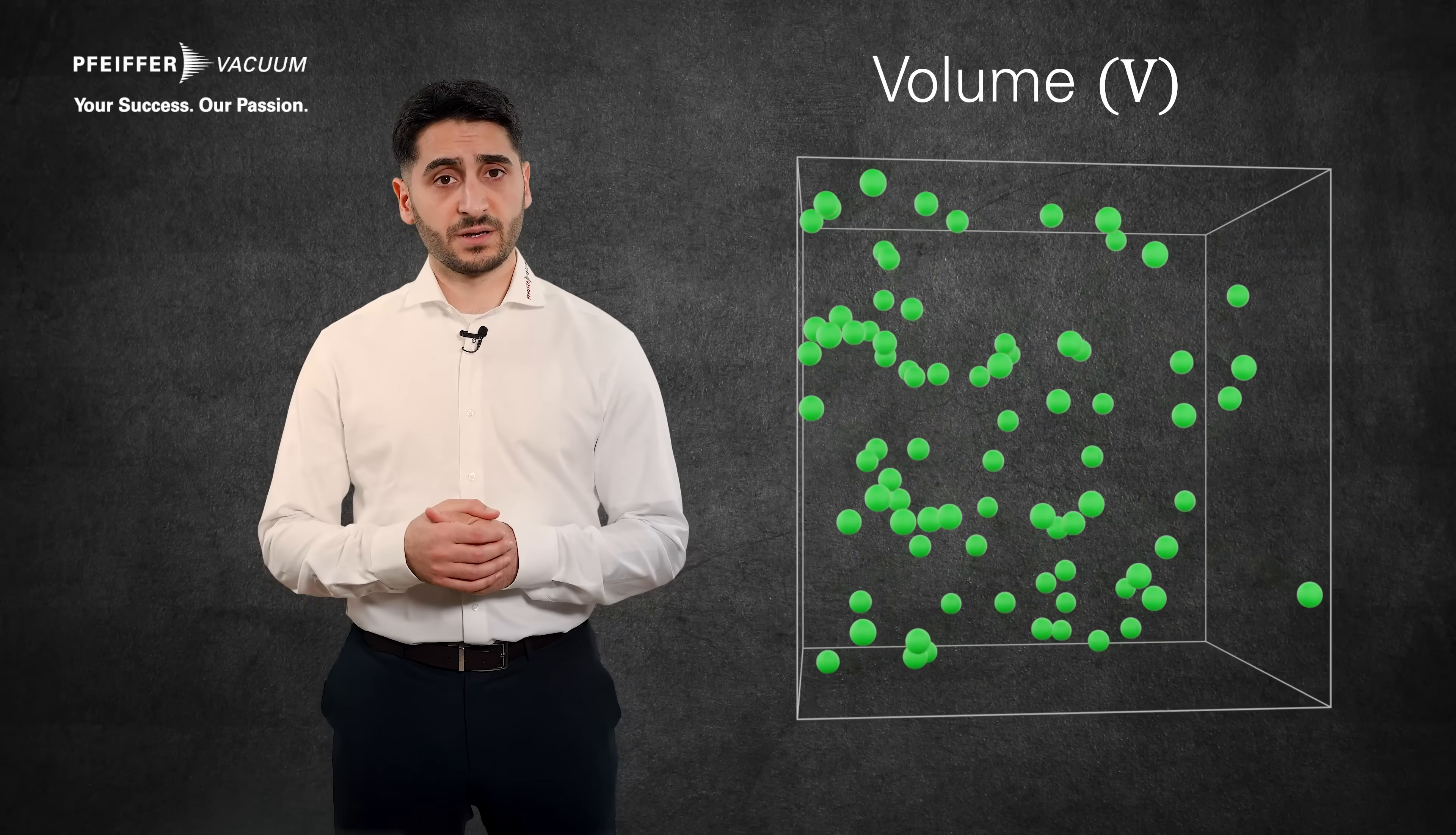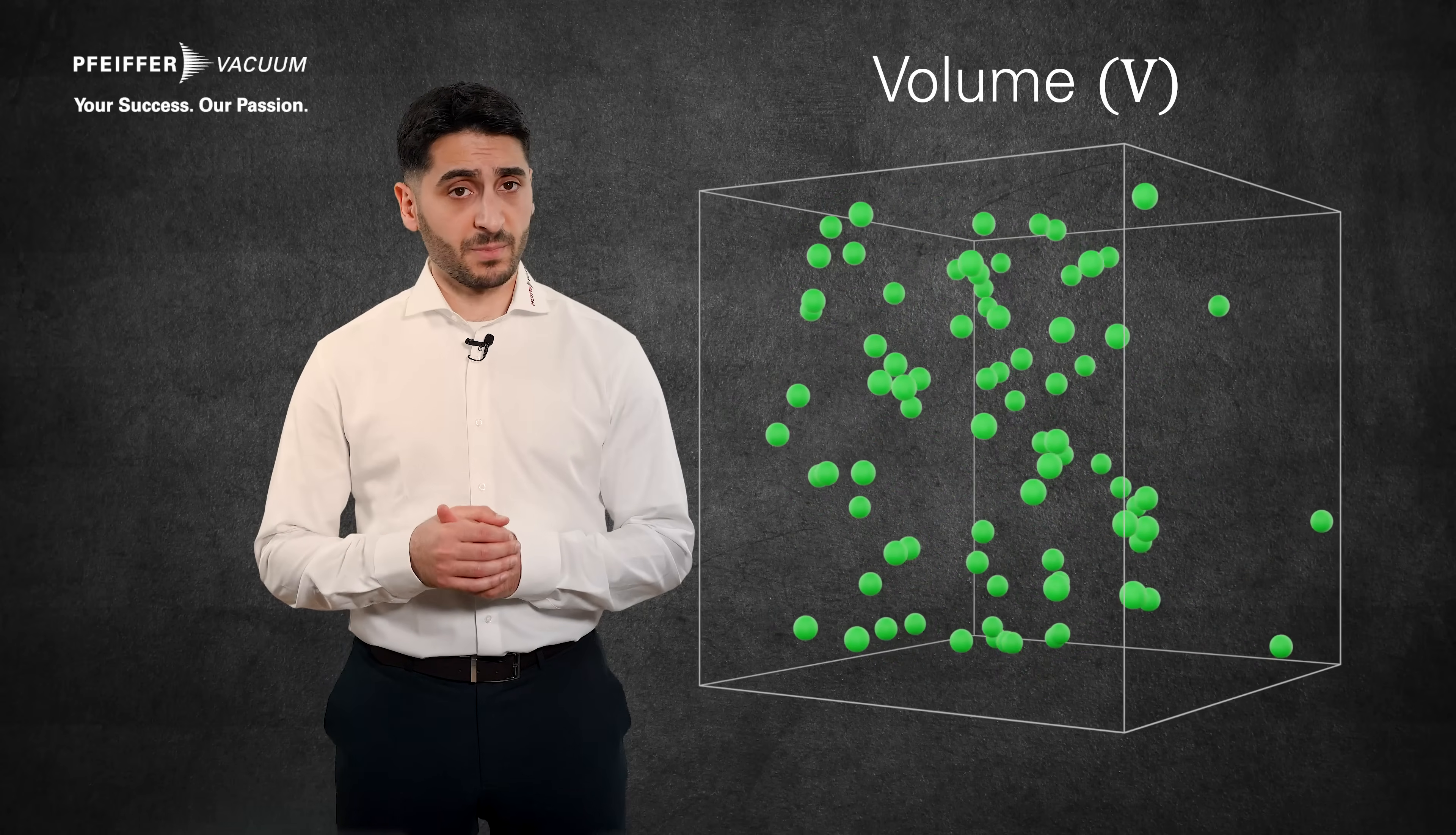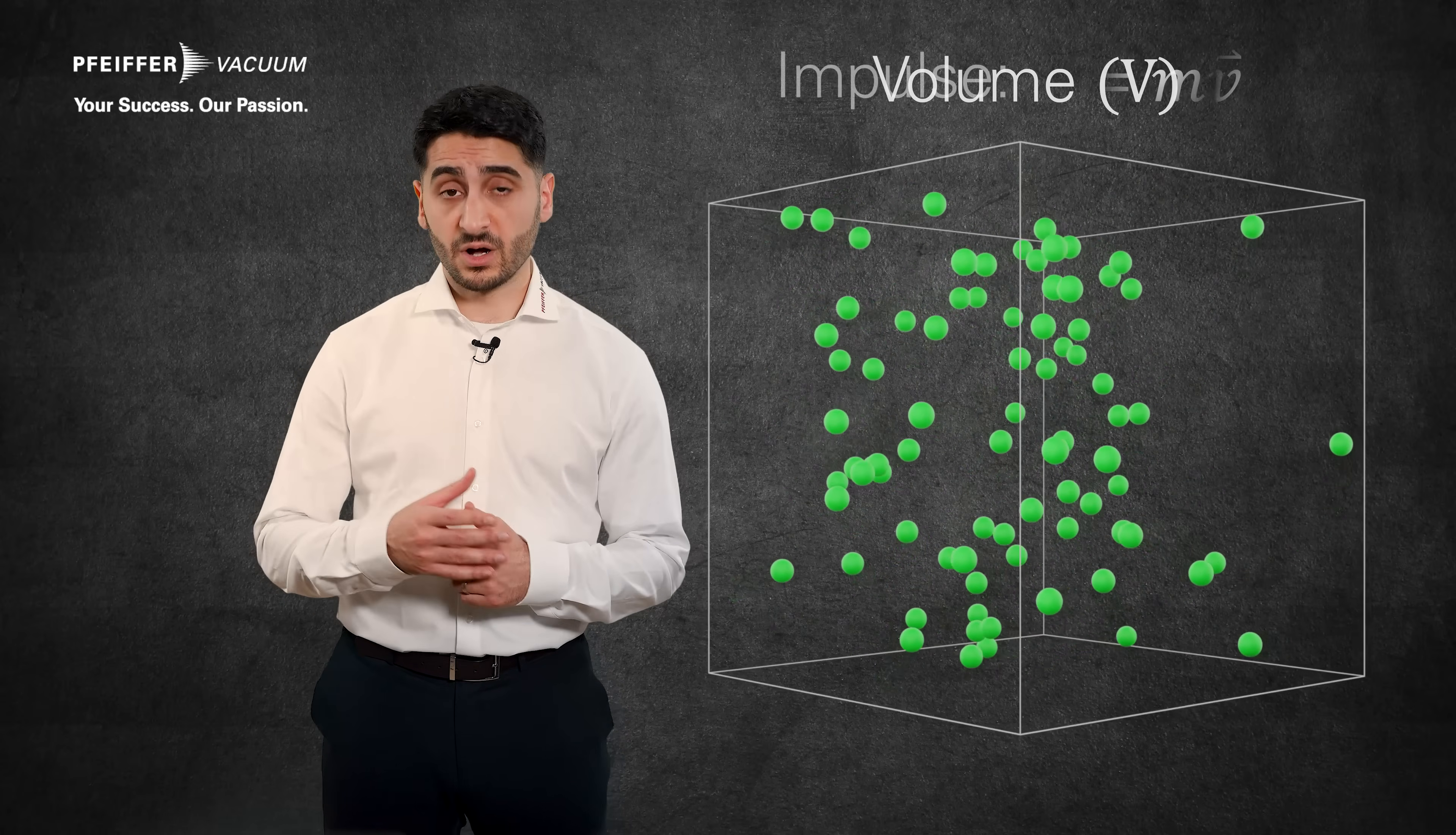Each of these gas particles has a certain mass m and the velocity v. The product of these two quantities, mass multiplied by velocity, is called impulse.